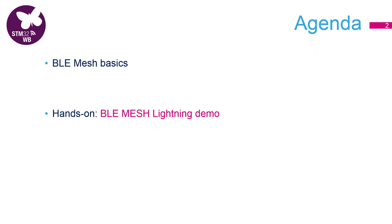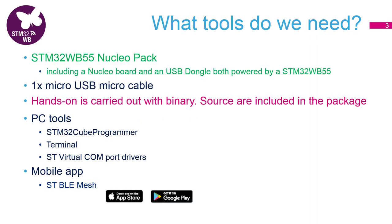So let's now have a look at what tools we are going to use. It's going to be a Nucleopack which consists of two boards: a WB Nucleo and a so-called WB Dongle. We are also going to need one micro USB cable.